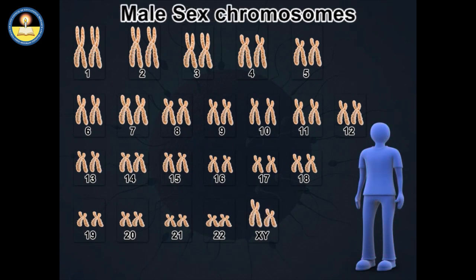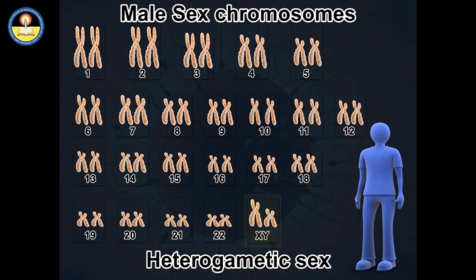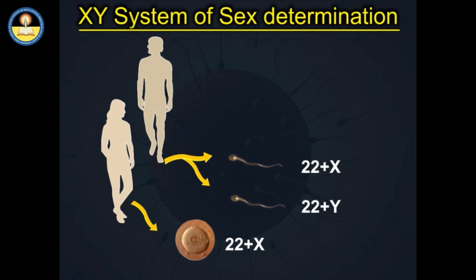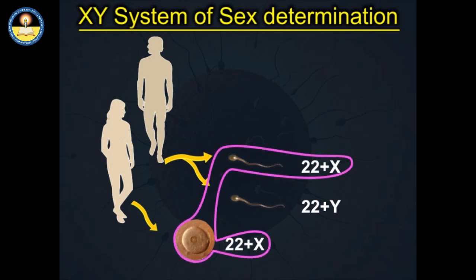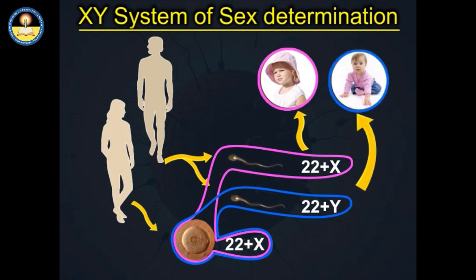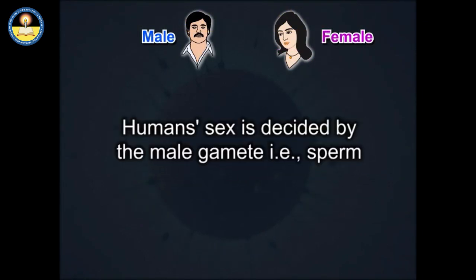Males have two distinct sex chromosomes, X and Y, and are called the heterogametic sex. A mature female will produce eggs, each with one X chromosome. A mature male will produce sperm with either an X chromosome or a Y chromosome. When an egg and a sperm fuse during reproduction, the chromosome that the sperm carries determines the sex of the child. This is the generally accepted theory of sex determination in humans. Human sex is decided by the male gametes, that is, sperm.